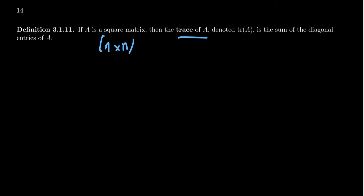And this is called the trace of a matrix. We'll denote this tr(A), and the trace is simply going to be the sum of the diagonal entries of that matrix.